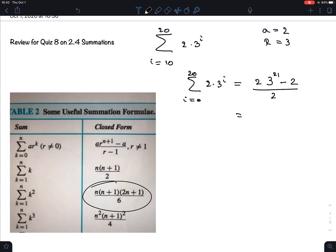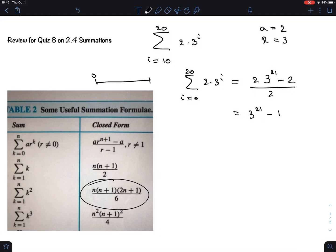You can simplify: it will be 3 to the 21 minus 1, which is really a huge number, so I'm not even going to spell that out. But this is going from 0 to 20, and we really want to go from 10 to 20. So what did we do too much? We should subtract the part from 0 to 9.